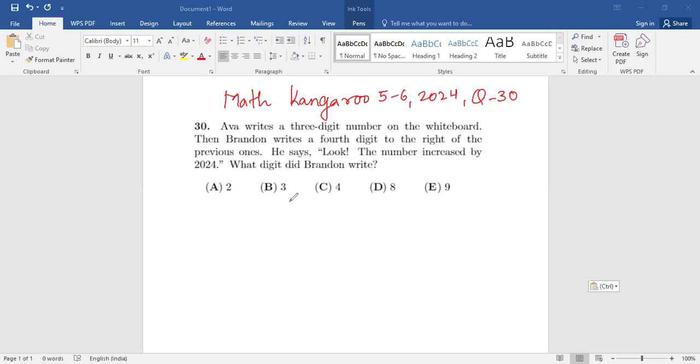So what does the question say? Eva writes a three-digit number. Let the number be, let's just say A, B, and C. So this is what Eva wrote. We don't know the digits as of yet.